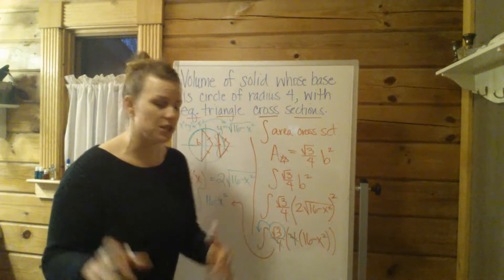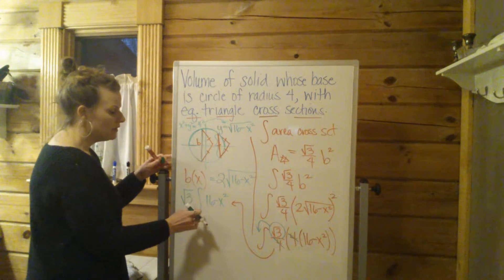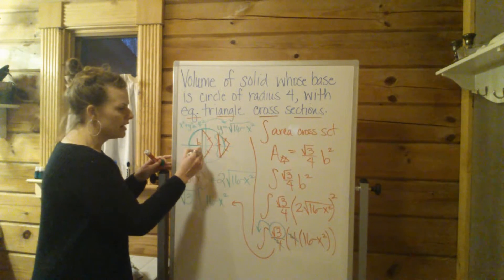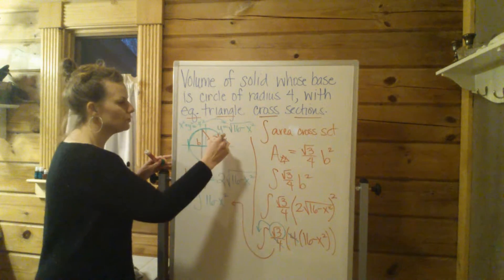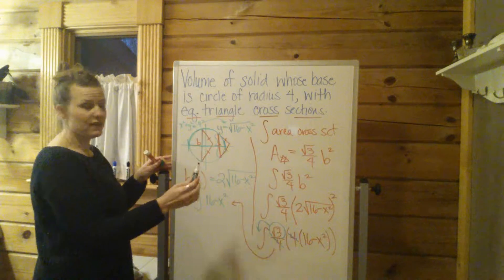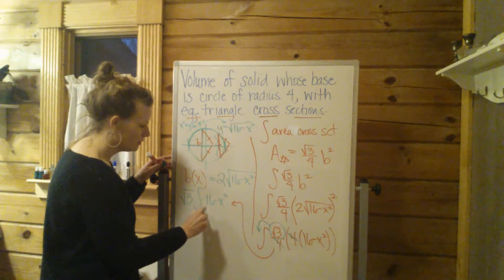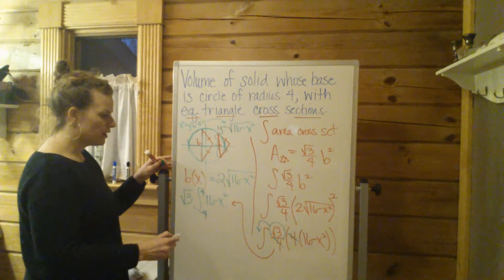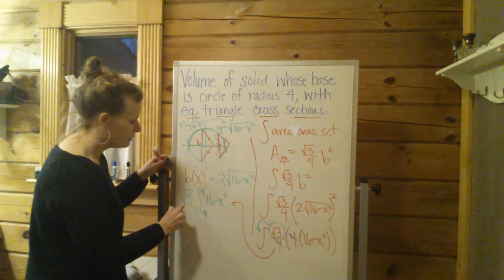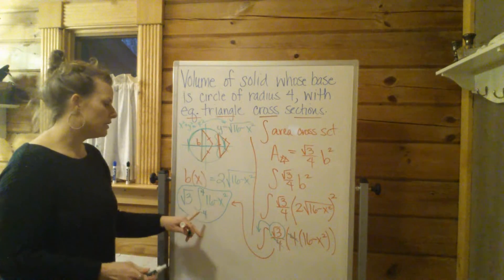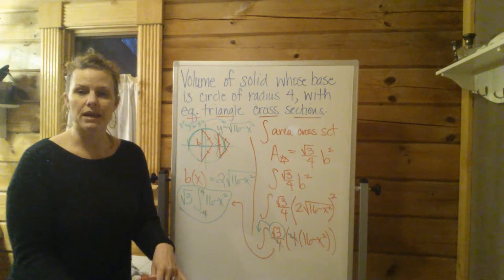Now the only thing we have left to do is find these bounds. These bounds are going to be the area that we're integrating over. So from left to right, the x values, we're going from negative 4 to positive 4. Those are your bounds for your integral.